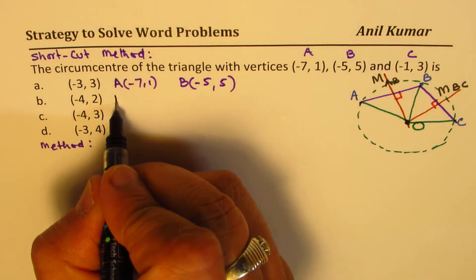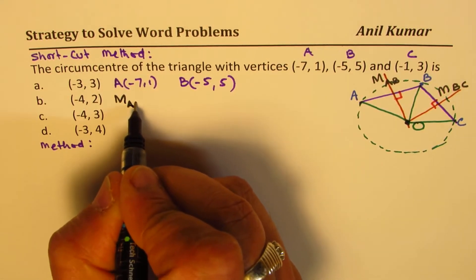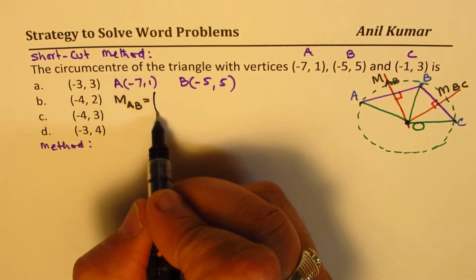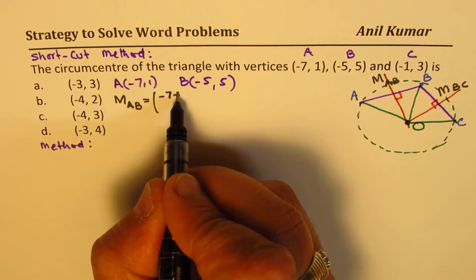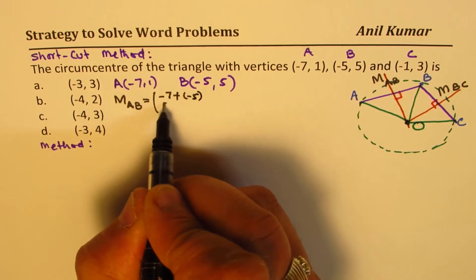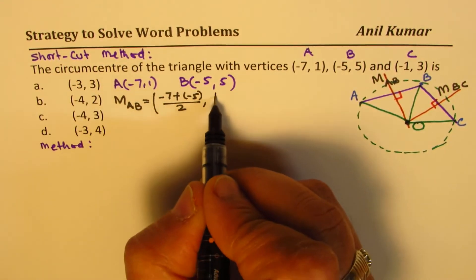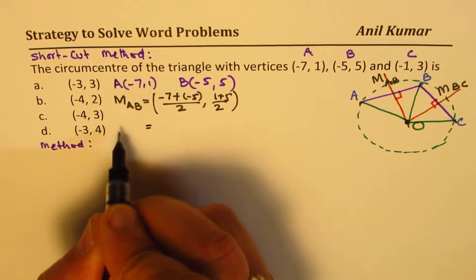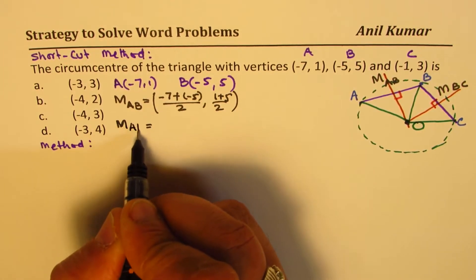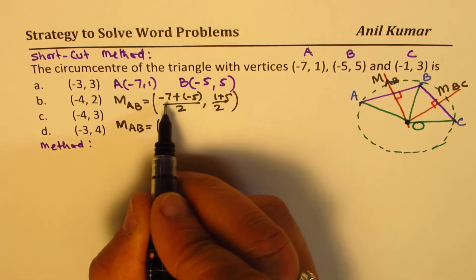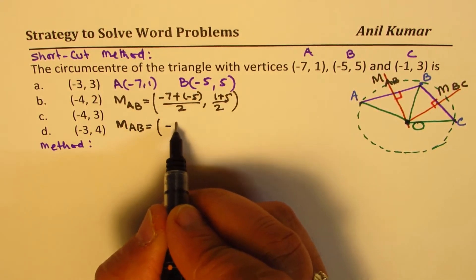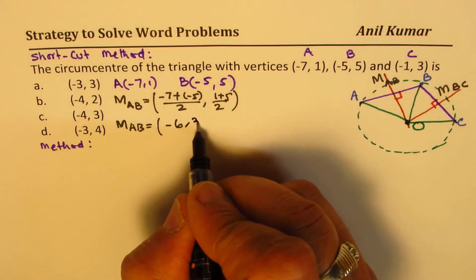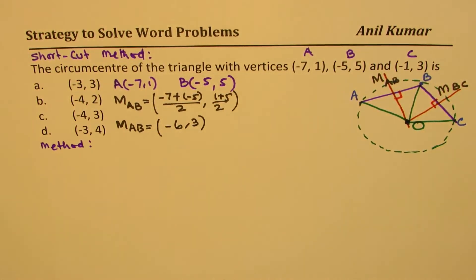So first step, let's find the midpoint of a and b. Midpoint is add them, divide by 2. So we get (-7 + -5)/2, that is the x value, and then we have (1 + 5)/2, the y value. So the midpoint for AB is this is -12, so that gives you -6 when you divide by 2. 6 divided by 2 is 3.